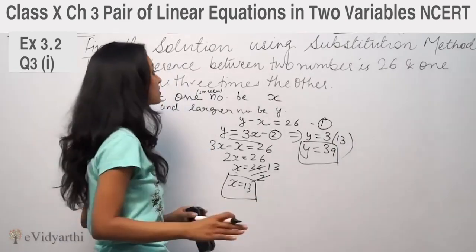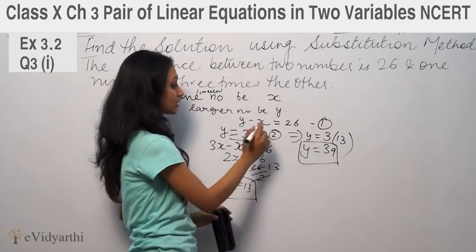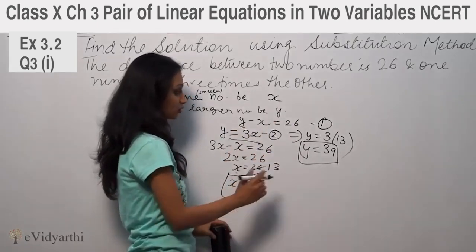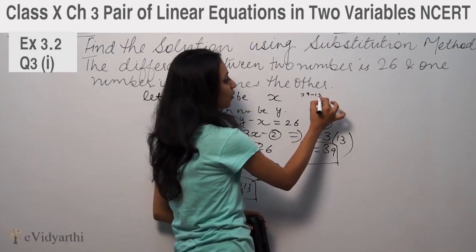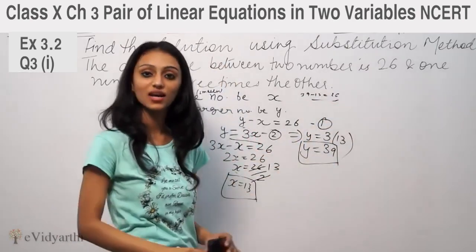y is equal to 3 times 13, so y is equal to 39. So we have x equal to 13 and y equal to 39.